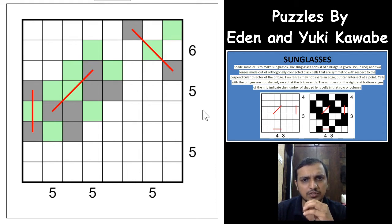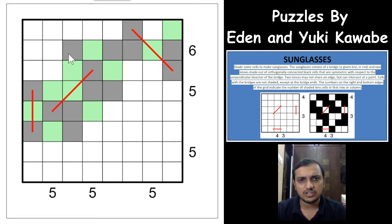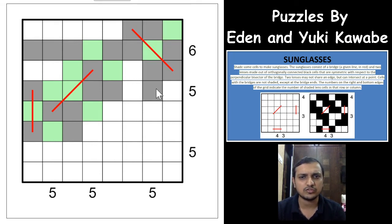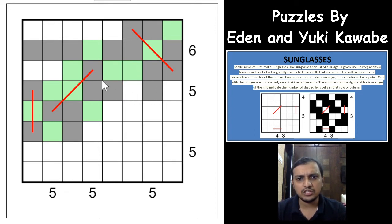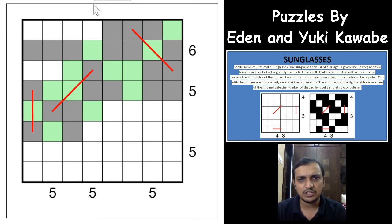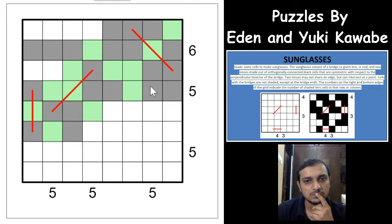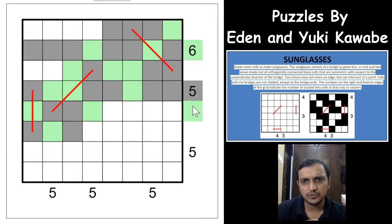An easy one we nearly missed: the 6 clue means all 6 cells here are shaded. This must be formed symmetrically, so the corresponding cells on the other lens are also shaded. Since two lenses of different sunglasses cannot touch each other orthogonally, certain adjacent cells must be unshaded. This forces additional cells to be shaded to fulfill the 5, and the symmetrical counterpart cell is also shaded. The 6 is fulfilled and the 5 is fulfilled.